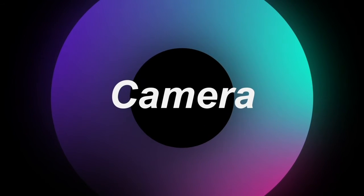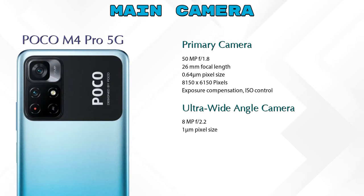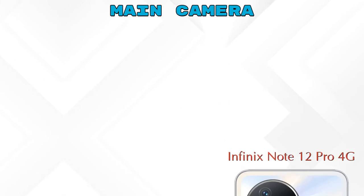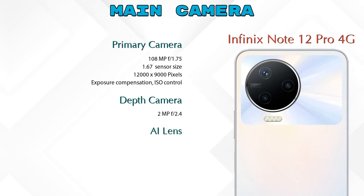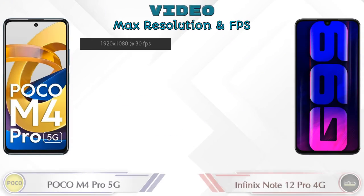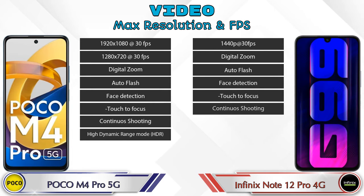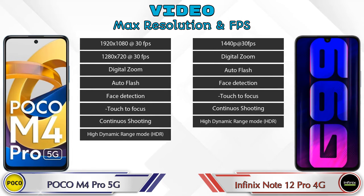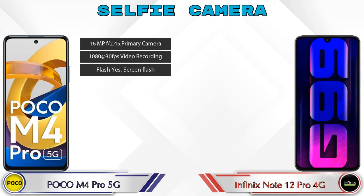Now let's look at the cameras. The M4 Pro 5G has two rear cameras: a primary camera and an ultra-wide angle camera. The Note 12 Pro 4G has three rear cameras: a primary camera, a depth camera, and an AI lens. For video, the M4 Pro 5G has 8 different feature options and the Note 12 Pro 4G has 7. Both phones have a single front selfie camera with three different features available.